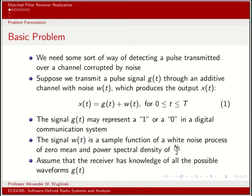Suppose we transmit a pulse signal g(t) through an additive channel with noise w(t), which produces the output x(t) = g(t) + w(t) for 0 ≤ t ≤ T. The signal g(t) may represent a 1 or a 0 in a digital communication system. The noise w(t) is a sample function of a white noise process with zero mean and power spectral density N₀/2. Given that the receiver has knowledge of all the possible waveforms g(t), can it make a decision based on what it observes when it intercepts a signal - which signal was transmitted even with noise present?